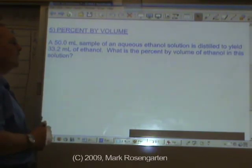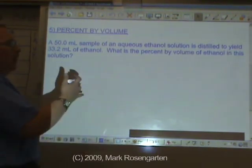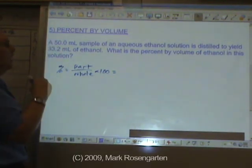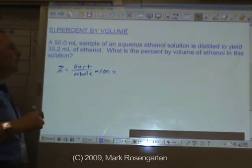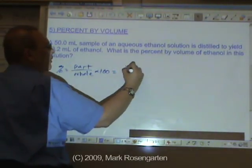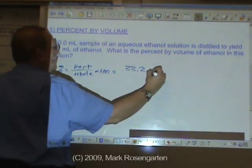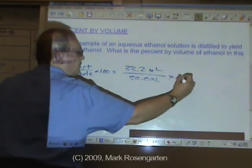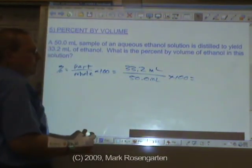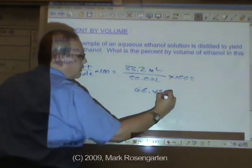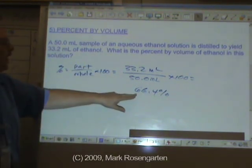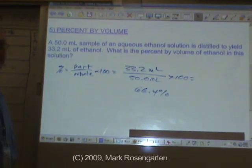Percent by volume is the same thing, except the part and the whole are in terms of volume, not mass. So our part is, we have a 50 milliliter sample, 33.2 milliliters of it is ethanol. 33.2 milliliters out of the 50 milliliter sample times one hundred, 66.4 percent ethanol by volume. What this means is that the ethanol makes up 66.4 percent of the total volume of the solution.